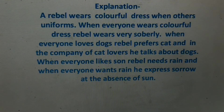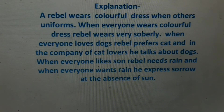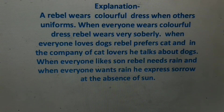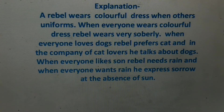Explanation: a rebel wears colorful dress when others wear uniform. When everyone wears colorful dress, the rebel wears very sober dress. When everyone loves dogs, the rebel prefers cats, and in the company of cat lovers, he talks about dogs. When everyone likes the sun, the rebel needs rain. And when everyone wants rain, he expresses sorrow at the absence of sun — he would say the sun did not rise today. When it is sunny and others are praising it, he would miss the rain. He would always say the opposite of what others are saying.